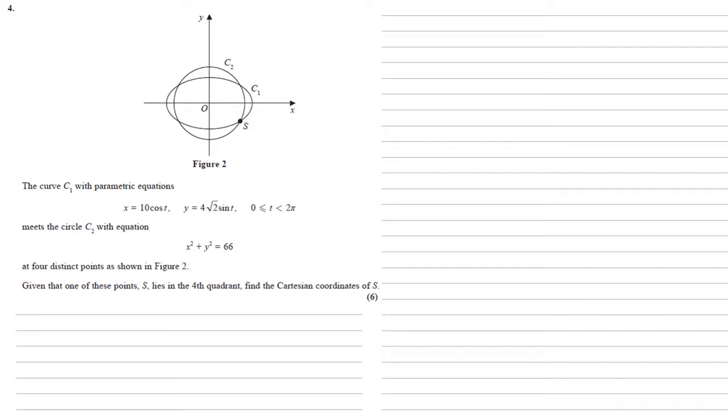At four distinct points as shown in figure 2. Given that one of these points s lies in the fourth quadrant, find the Cartesian coordinates of s.